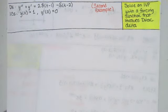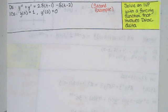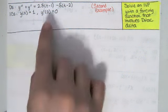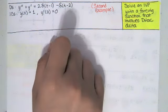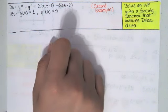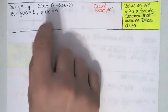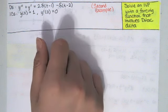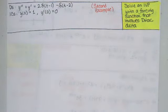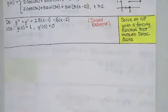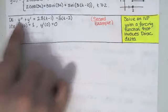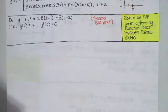In this video we work our second example in which the forcing function involves a delta function. We've got two delta functions here: a Dirac delta at t minus 1 and a Dirac delta at t minus 2. So we can think of impulses acting at t equals 1 and t equals 2 — two sudden things happening to this system at those two moments in time. The question is what type of function would you have if y of 0 equals 1 and y prime of 0 equals 0.